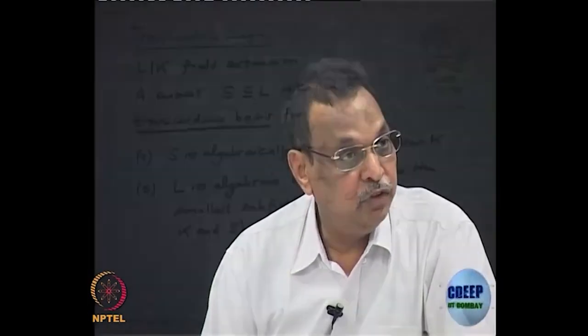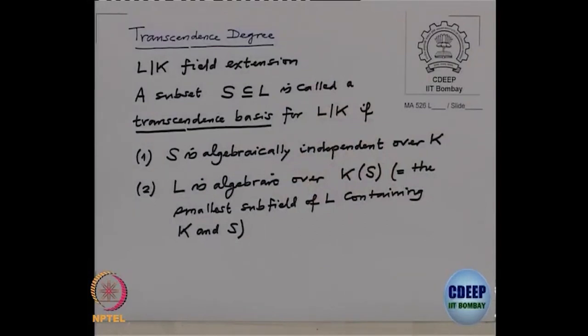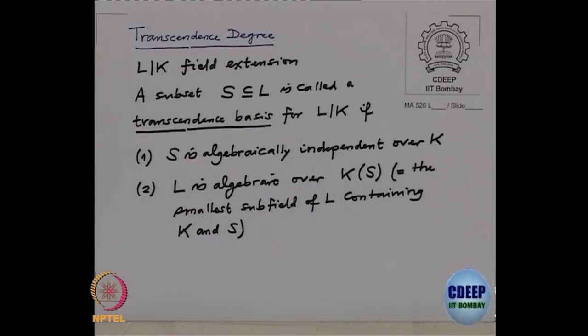Let us recall some basic things about transcendence degree. If I have a field extension L over K, a subset S of L is called a transcendence basis of L over K if: first, S is algebraically independent over K; and second, L is algebraic over K(S) — the smallest subfield of L containing K and S, or equivalently the field generated over K by S.